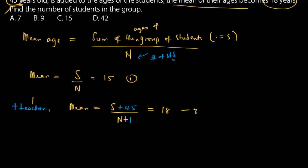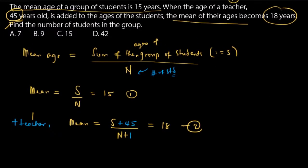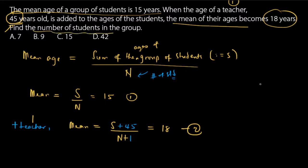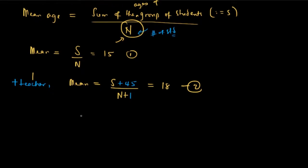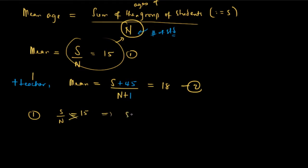The question asks us to find n, the number of students. Using equation one: s divided by n equals 15. Cross multiplying gives s equals 15n.